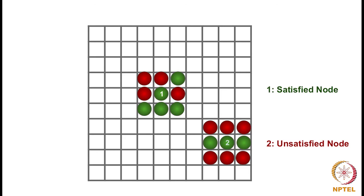We are going to recalculate the unsatisfied nodes in every iteration, because one node shifting affects the rest of the nodes as well. So let's get started with the implementation.